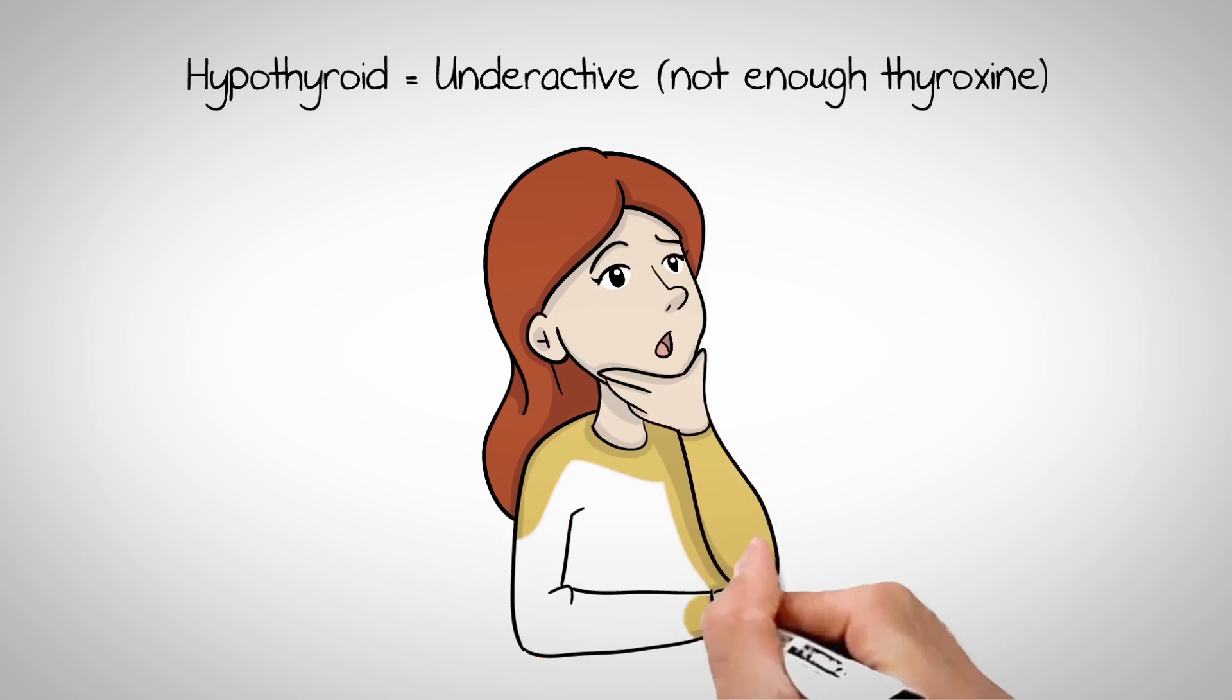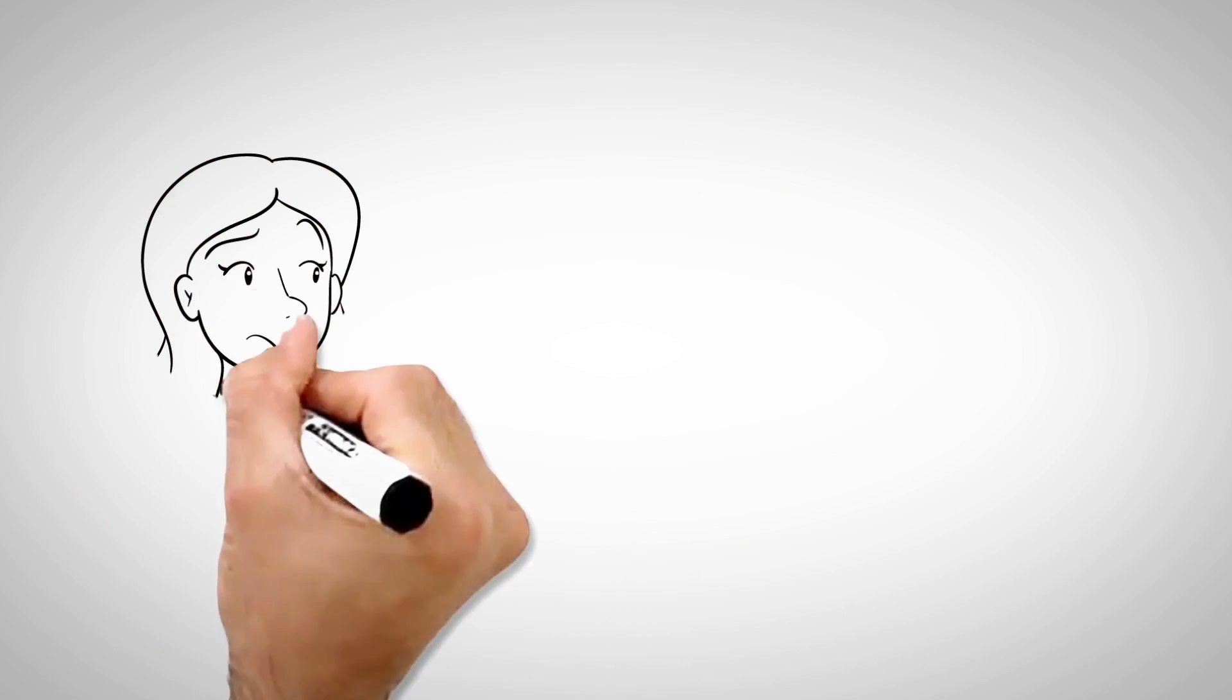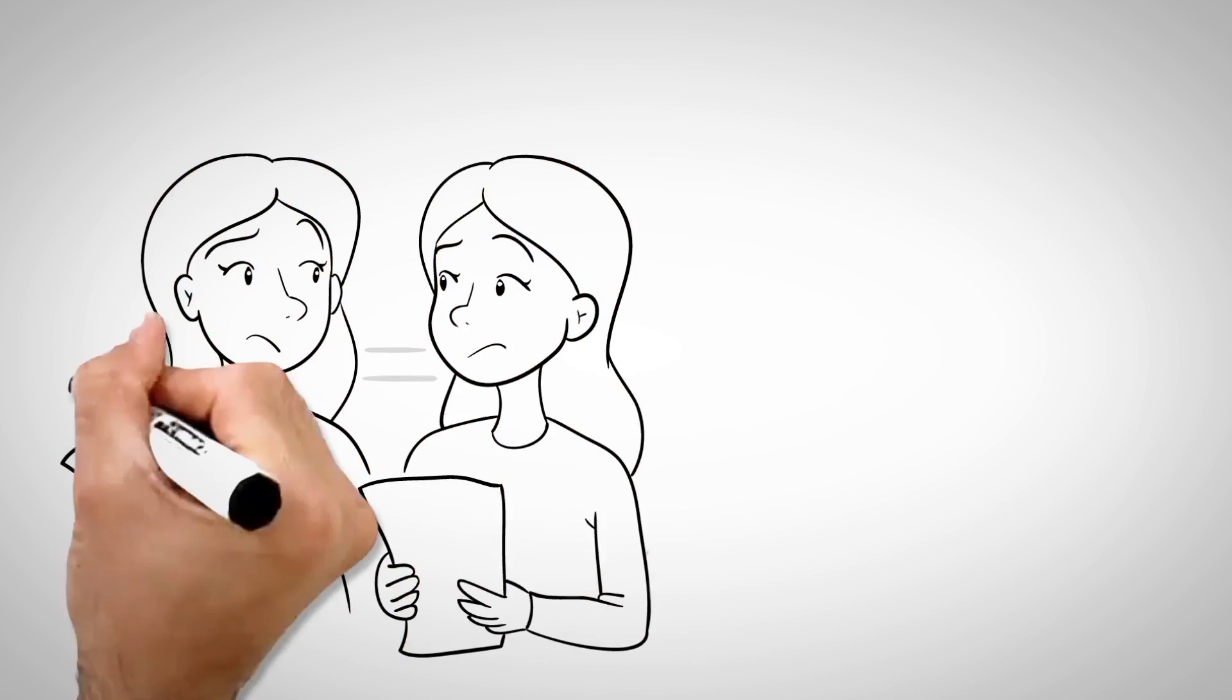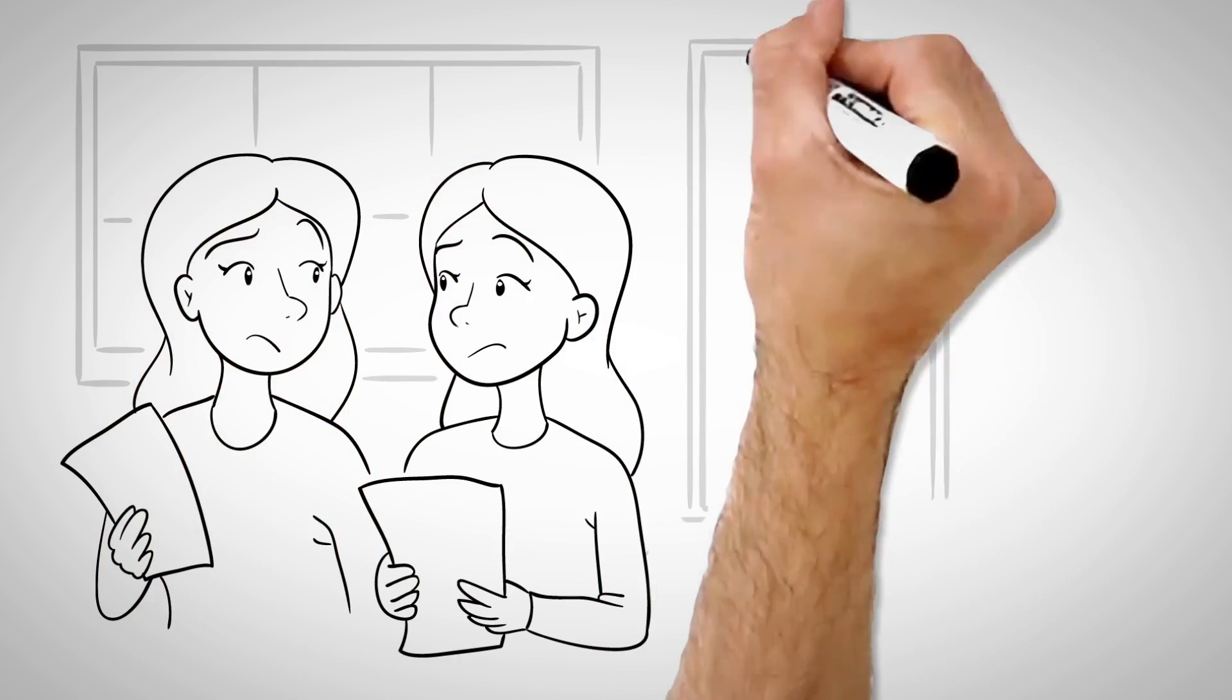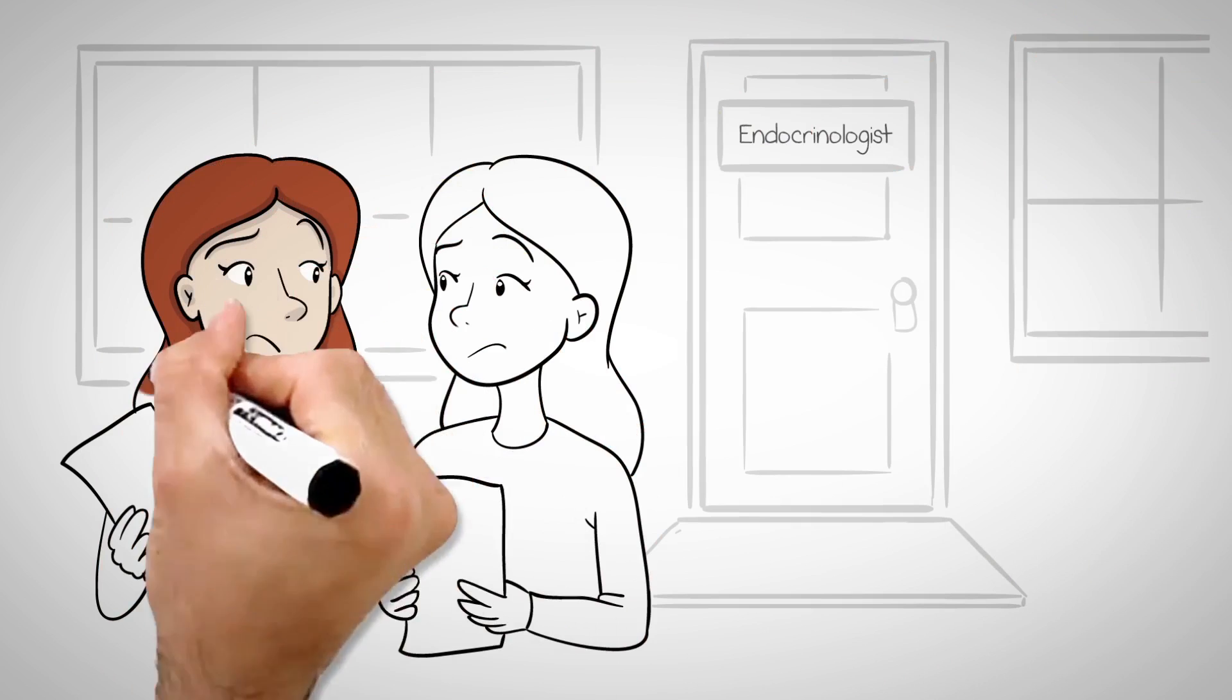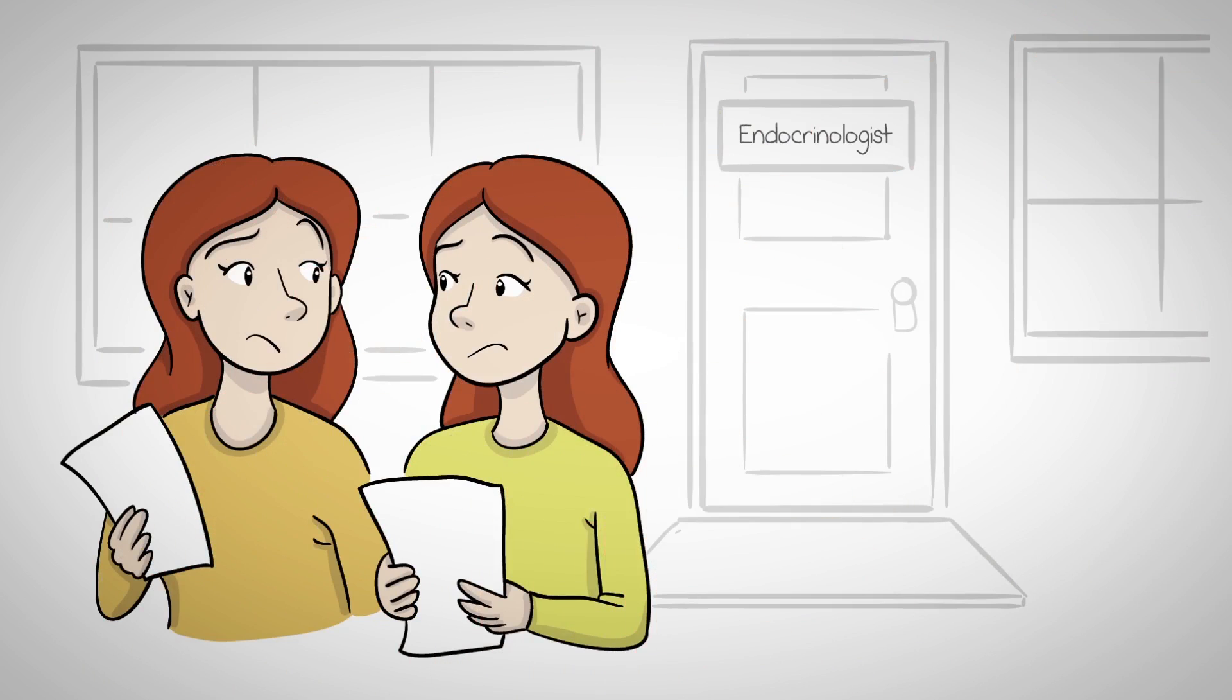That should be good news, right? Now the sisters each have a diagnosis and a course of treatment. But unfortunately, Kathy and Carrie leave the office with more questions than answers. What is the thyroid anyway? What does it do? What can happen if there's too much or too little thyroxine? So when they get home...